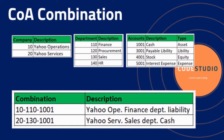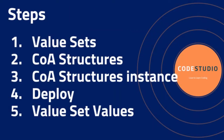In Oracle, you can add more dimensions called segments and create a combination of accounts. For example, company is one segment, department is another segment, and account is a third segment with different values. These three segments can be combined to create an account combination to identify and classify transactions on a ledger. For example, 10-110-1001 means the finance department of Yahoo Operations company has a liability.